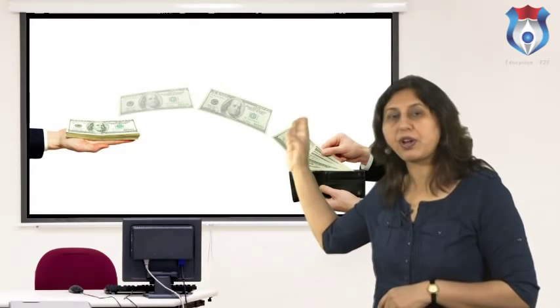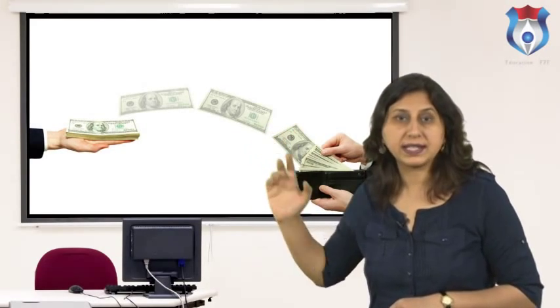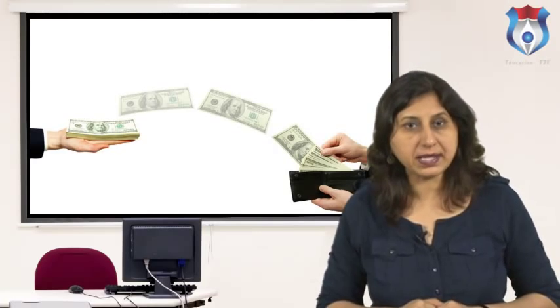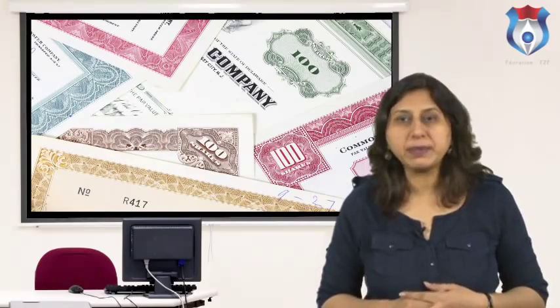Agency functions of commercial banks include collection of bills and drafts, collection of interest and dividends on behalf of customers, payment of interest, installments of loans, insurance premiums, and purchase and sale of securities. Banks also execute the will of their customers. Other functions include payment of credit letters and traveler's cheques, gift cheques, and bank drafts. Banks also provide locker services for the valuable security of their customers and charge a very nominal fee. Banks also deal in foreign exchange; such banks are usually called foreign exchange banks.